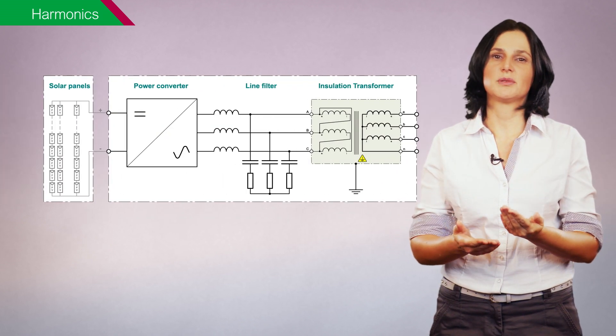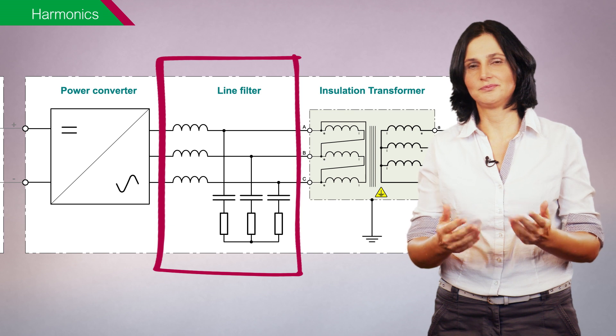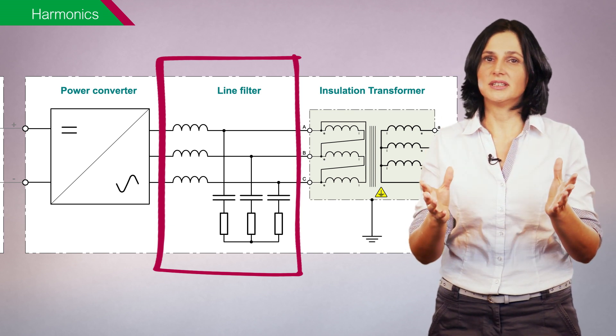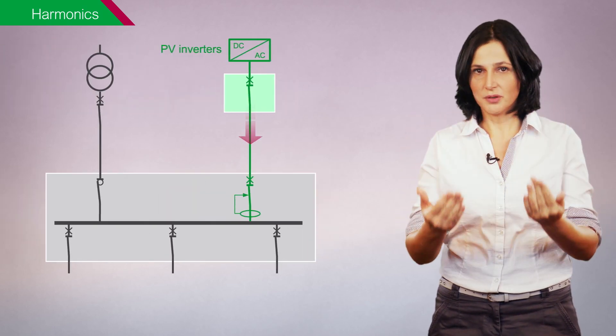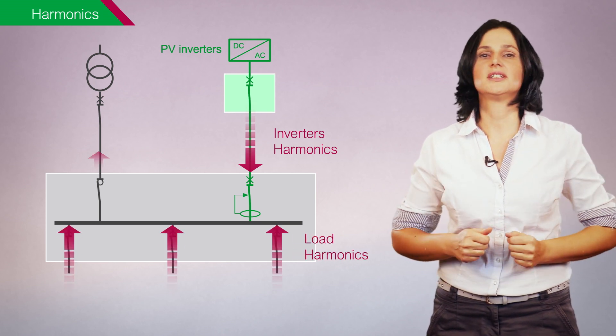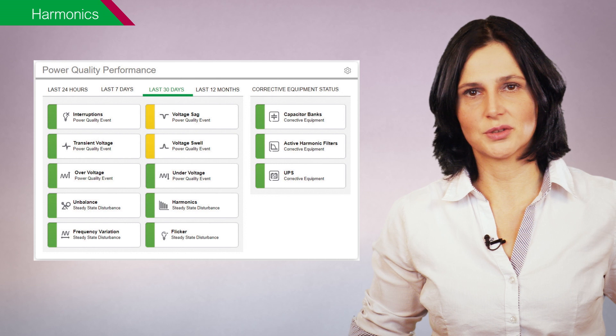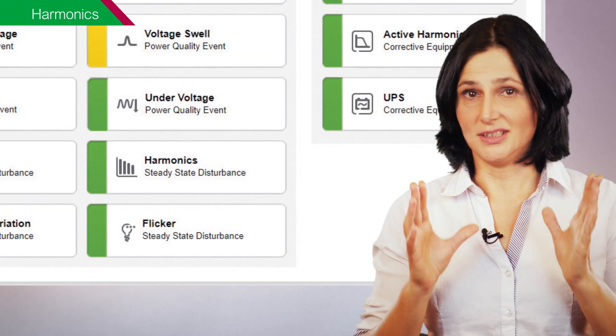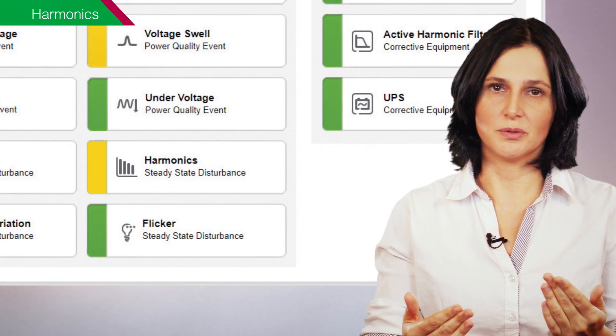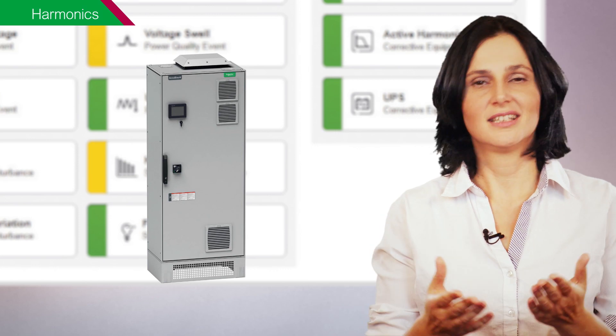This harmonic disturbance generally remains within an acceptable range because photovoltaic inverters have integrated harmonic filters. However, the overall harmonic distortion in the electrical installation can be higher because the harmonics injected by the photovoltaic inverters are combined with those generated by the loads. Therefore, it is recommended to supervise harmonics in the electrical installation, and if the overall harmonic level is over the acceptable limits, harmonic mitigation measures such as active or passive filters can be added.